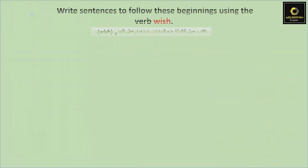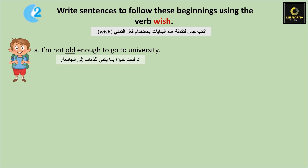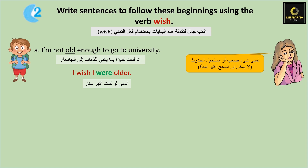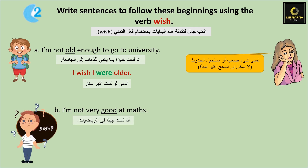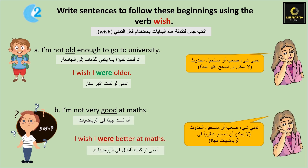Now let's move on to question number two: Write sentences to follow these beginnings using the verb wish. For example: I am not old enough to go to university. فشو بتمنى؟ بتمنى لو كنت أكبر. I wish I were older. I'm not very good at maths. I wish I were better at maths. لاحظوا أنه عم استخدم were، ما was، لأنه في عندي حدث غير حقيقي. لما بيكون في عندي شيء غير حقيقي بيستخدم were.